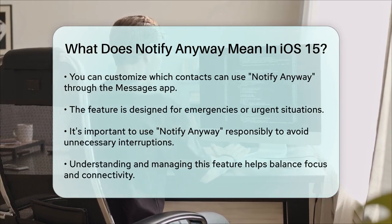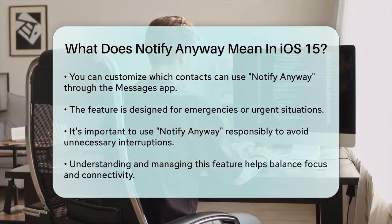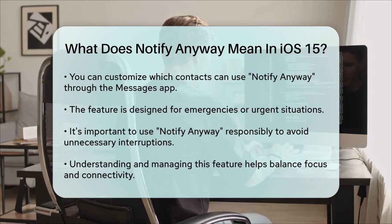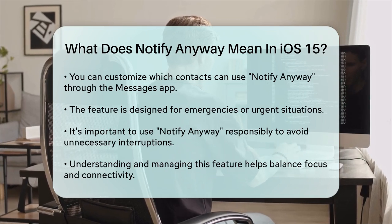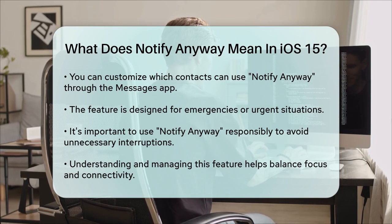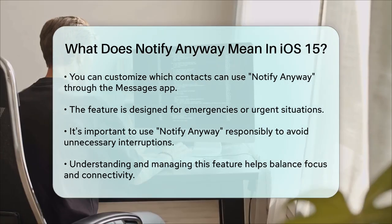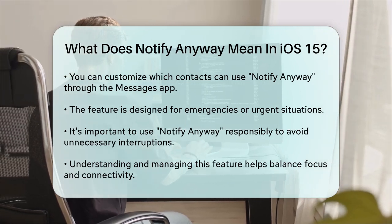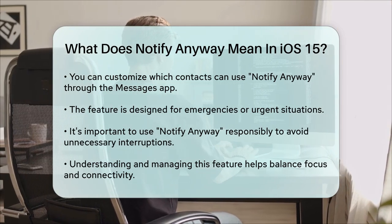You can also customize which contacts can use notify anyway by adjusting settings within the Messages app. For example, you can allow certain contacts to always notify you even when you have a focus mode on. In summary, notify anyway is a feature that lets others bypass your iPhone's focus mode to send you urgent notifications. By understanding how it works and how to manage it, you can balance your need for focus with the need to stay connected in important situations.